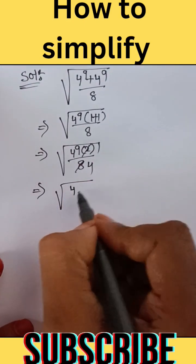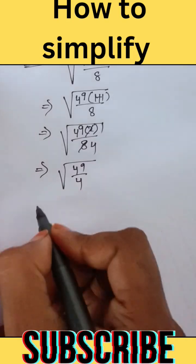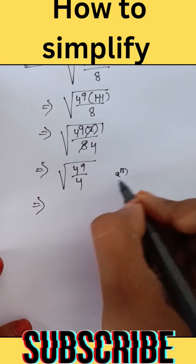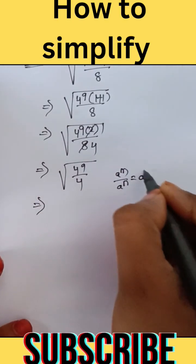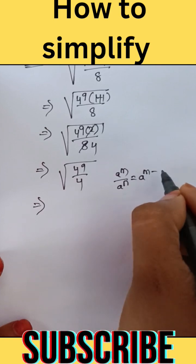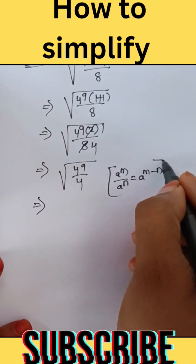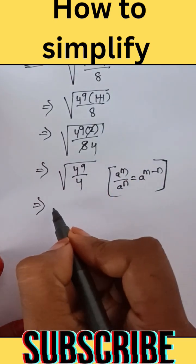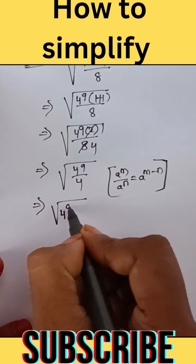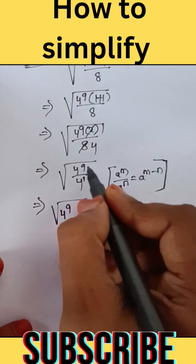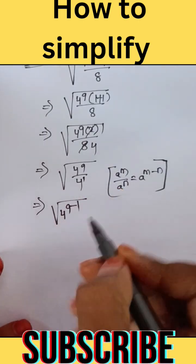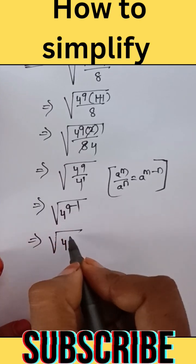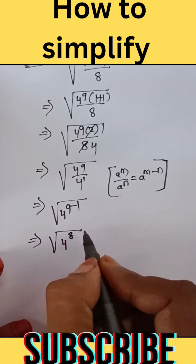We now have square root of 4 power of 9 divided by 4. Using the rule A power m divided by A power n equals A power m minus n, this gives square root of 4 power of 9 minus 1, which is square root of 4 power of 8.